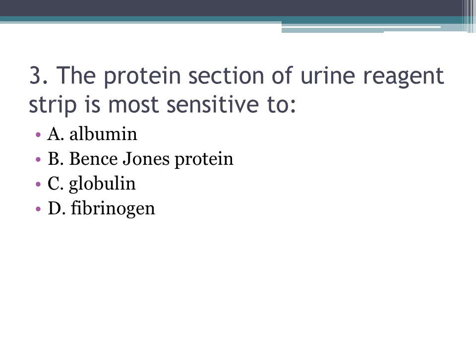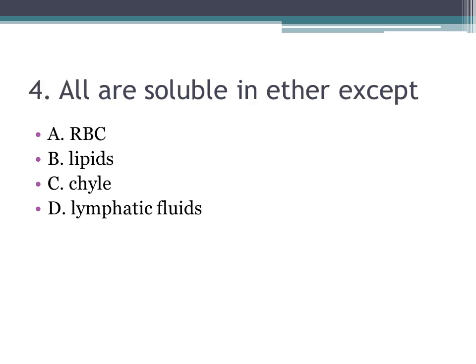Number three: the protein section of the urine reagent strip is most sensitive to A. albumin, B. Bence Jones protein, C. globulin, D. fibrinogen. The correct answer is A, albumin. Bence Jones protein is found in cases of multiple myeloma.